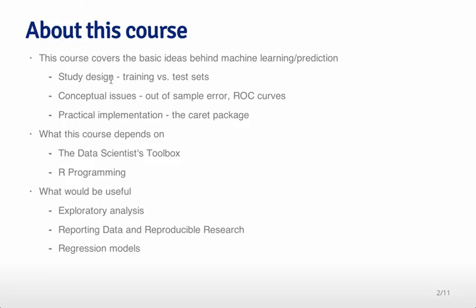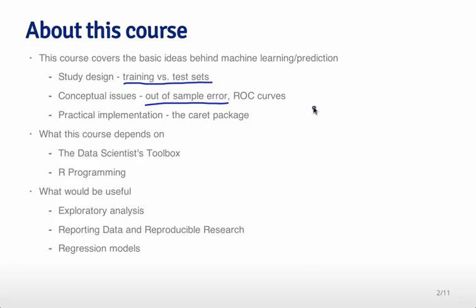We'll start off with ideas like study design — training versus test sets — and deciding how you actually build up a predictor on a real data set. Then we'll talk about conceptual issues like out-of-sample error and overfitting. You might have heard that some models are maybe a little too tuned to the noise and so won't predict well on a new sample. We'll talk about how to prevent those sorts of problems.